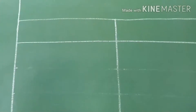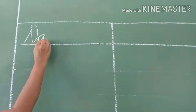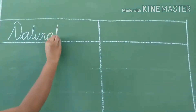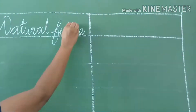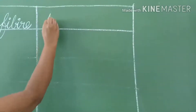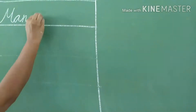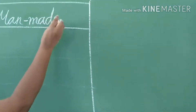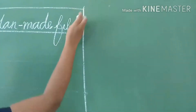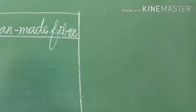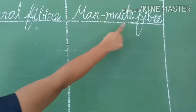Children, draw a table with two columns. Write in the first column: Natural Fiber. In the next column: Man-Made Fiber.